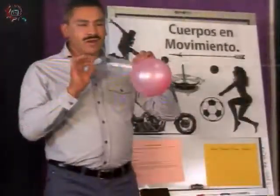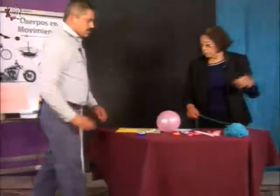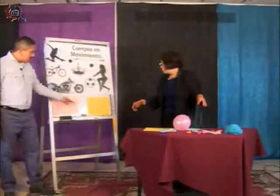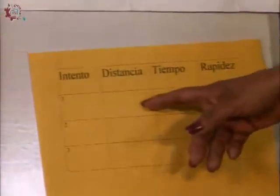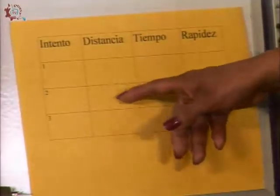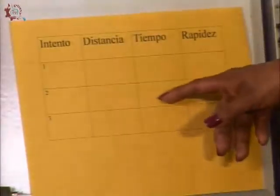La propuesta es que ya cuando nuestro móvil se haya desplazado, tomen la distancia recorrida y los tiempos. En el primer intento: ¿cuál fue la distancia?, ¿qué tiempo se empleó?, ¿cuál es su rapidez? Recordando que debemos anotar las unidades, si fueron metros sobre segundo o kilómetros por hora. Segundo intento: ¿qué distancia recorrió?, ¿qué tiempo se empleó?, ¿con qué rapidez llegó?, ¿y las unidades? Tercer intento: la distancia recorrida, el tiempo empleado, el valor de la rapidez y las unidades.